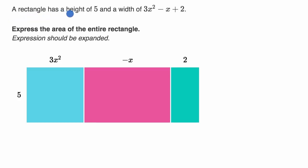We are told a rectangle has a height of 5 and a width of 3x² - x + 2. And then we're told express the area of the entire rectangle and the expression should be expanded. So pause this video and see if you can work through this.